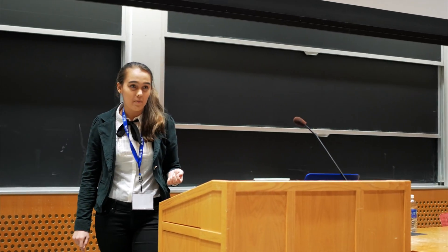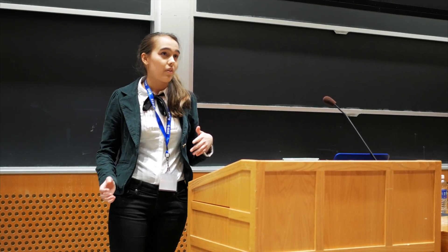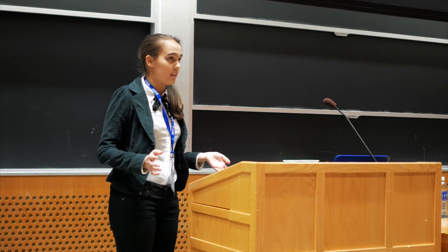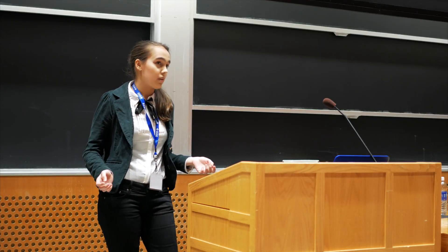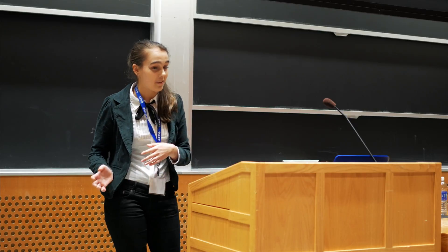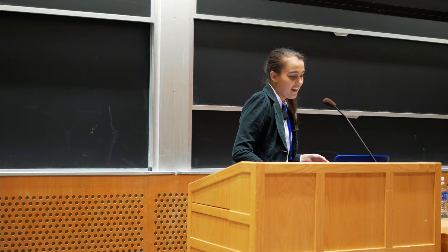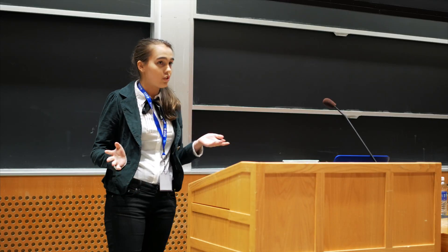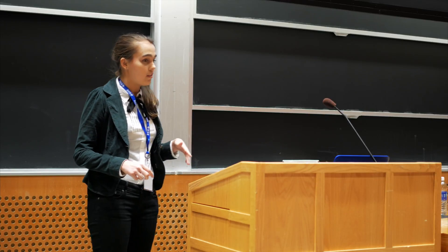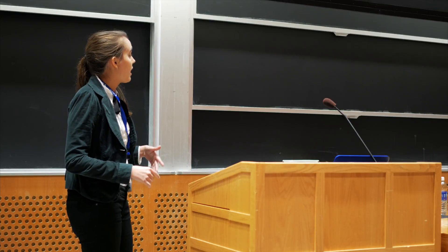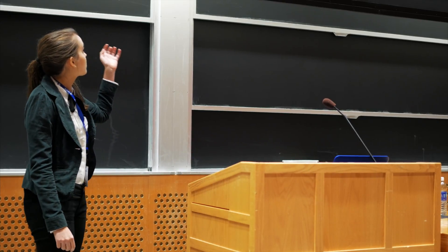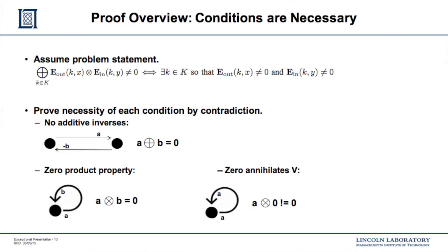The conditions we came up with are: first, no non-trivial additive inverses — nothing non-zero can add to zero; second, nothing non-zero can multiply to zero; and third, zero must annihilate the value set — anything times zero equals zero. We proved these are necessary and sufficient. For the necessity proof, we used contradiction for each condition: we assumed the problem statement, assumed the opposite of each condition, and found a graph for which A = E_out^T · E_in is violated. We did this for each of the three conditions.